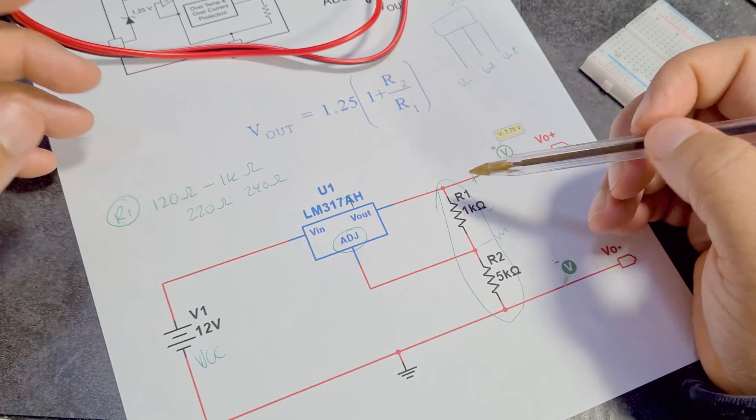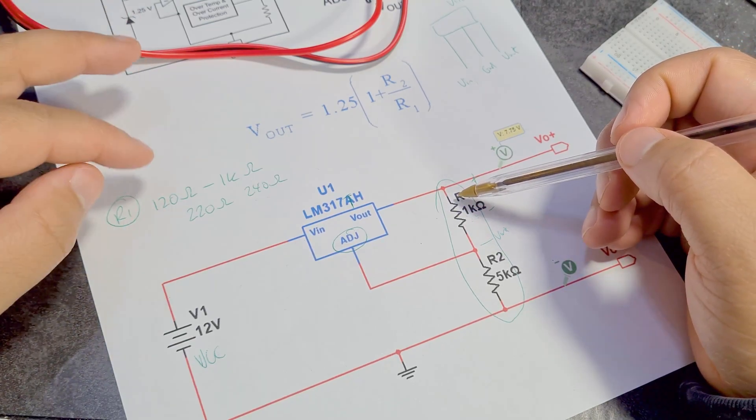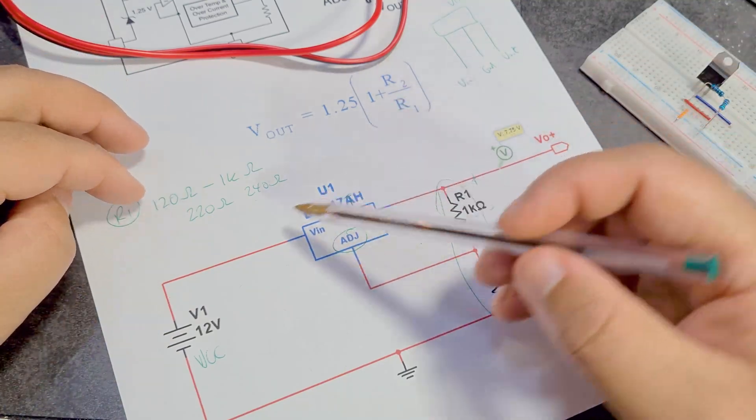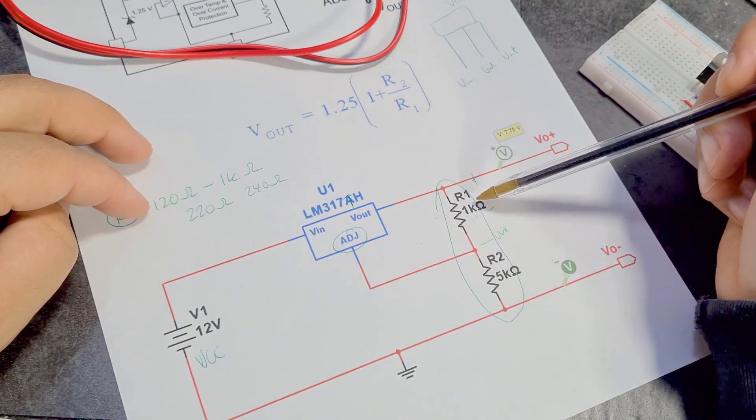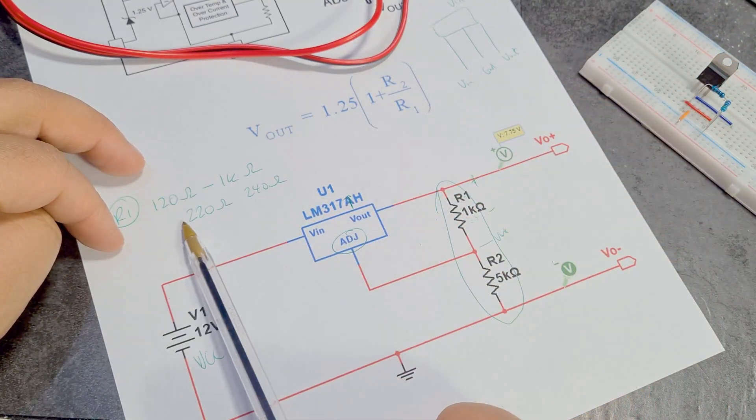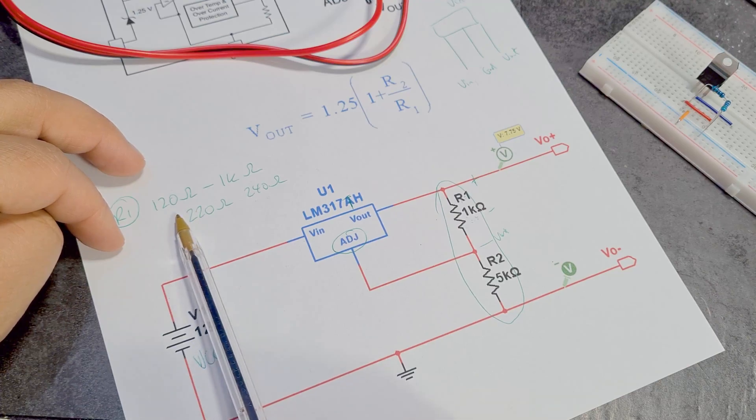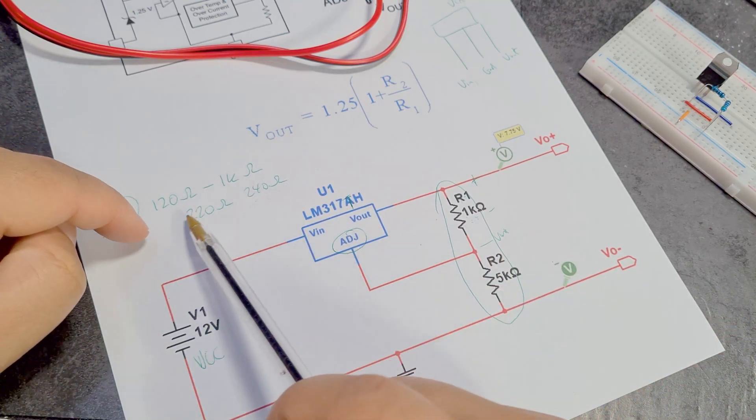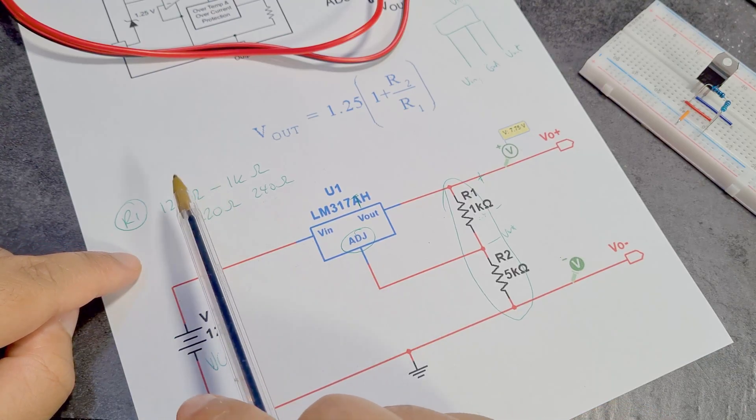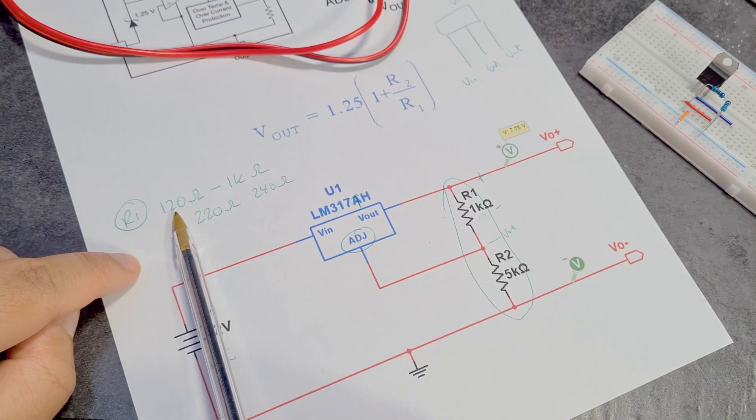So let's talk about how do we get these values. So for R1, which is the easiest one to do, usually it's going to be between 120 ohms and 1 kilo ohms. You're going to see a lot of circuits, most common is 220 ohms or 240 ohms. So for my circuit, I've gone with 1 kilo ohms just because I've got so many 1 kilo ohm resistors. It has something to do with R1 being the reference voltage. You check the voltage across R1, it's going to be 1.25 volts.